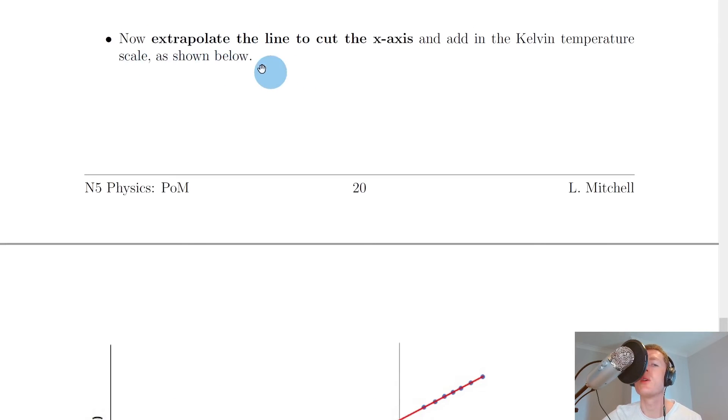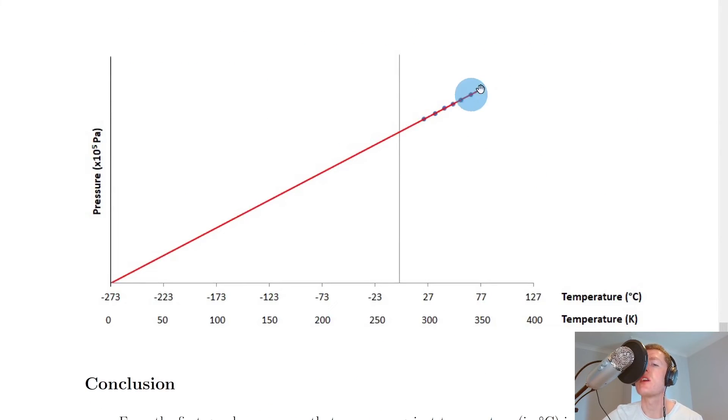So now what we want to do is extrapolate i.e. extend the line to cut the x-axis and add in the Kelvin temperature scale as shown below. So there's our initial line of best fit but if we extend this or extrapolate it backwards until it hits the x-axis then you'll see that it's cutting through at about minus 273 degrees Celsius. However you should know from the theory video on the Kelvin temperature scale that minus 273 degrees Celsius is equal to 0 Kelvin.